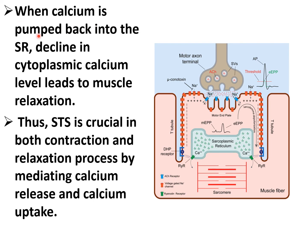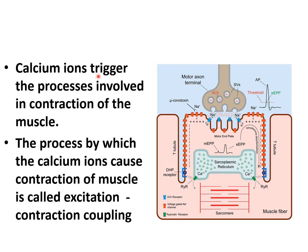When calcium is pumped back into the sarcoplasmic reticulum, there is a decrease in cytoplasmic calcium level that leads to muscle relaxation. The sarcoplasmic reticulum system is therefore crucial in both contraction and relaxation by mediating calcium release and calcium uptake. The process by which calcium ions cause contraction of the muscle is known as excitation-contraction coupling.